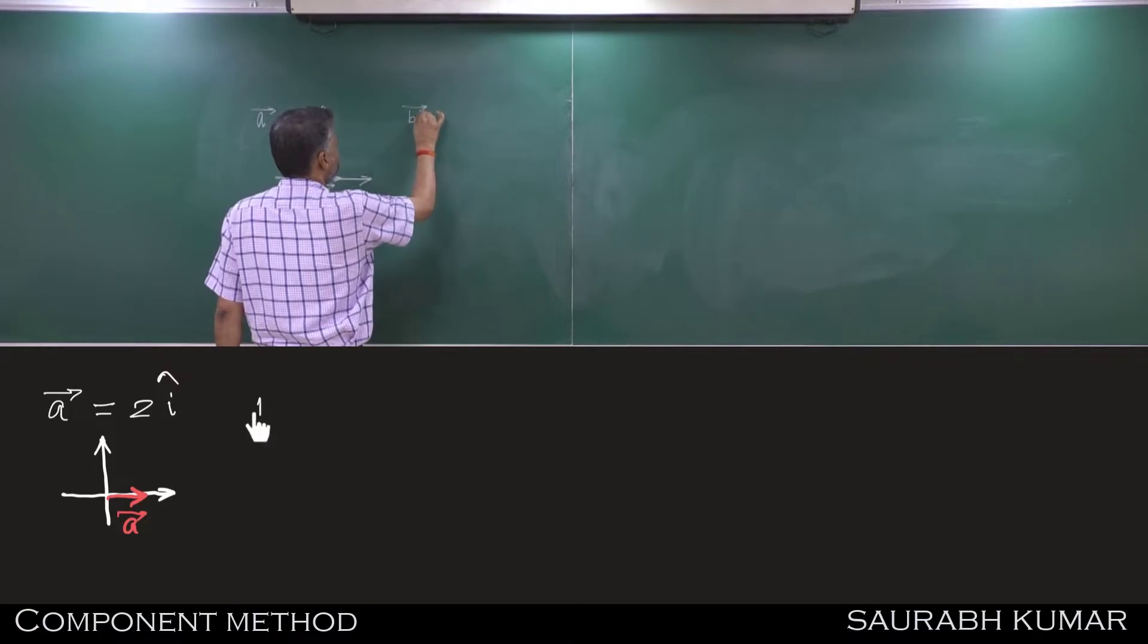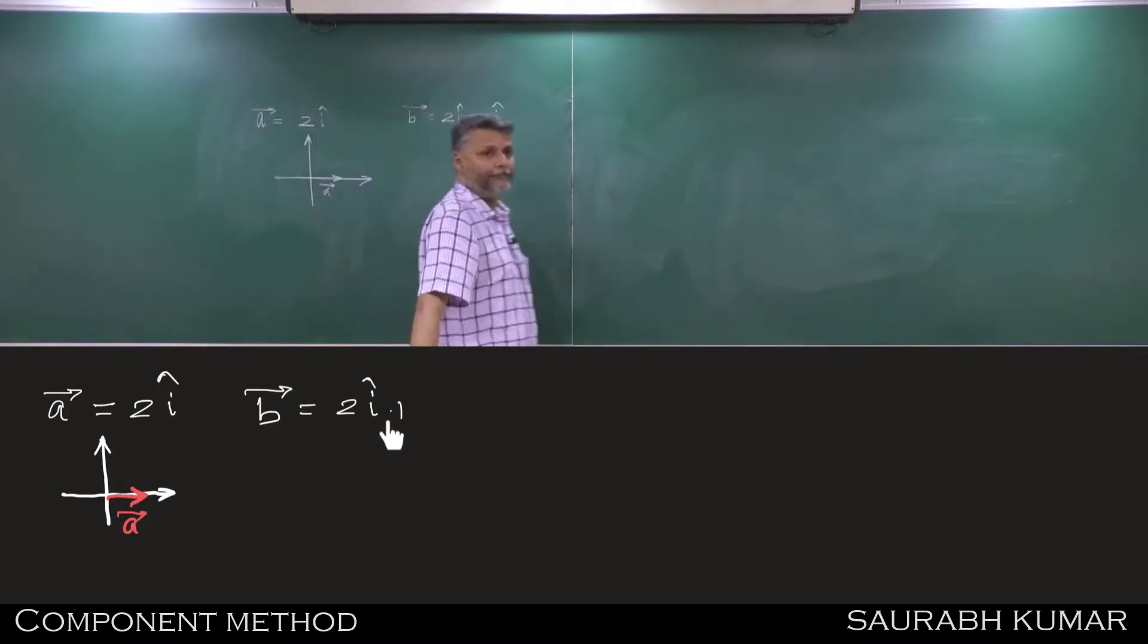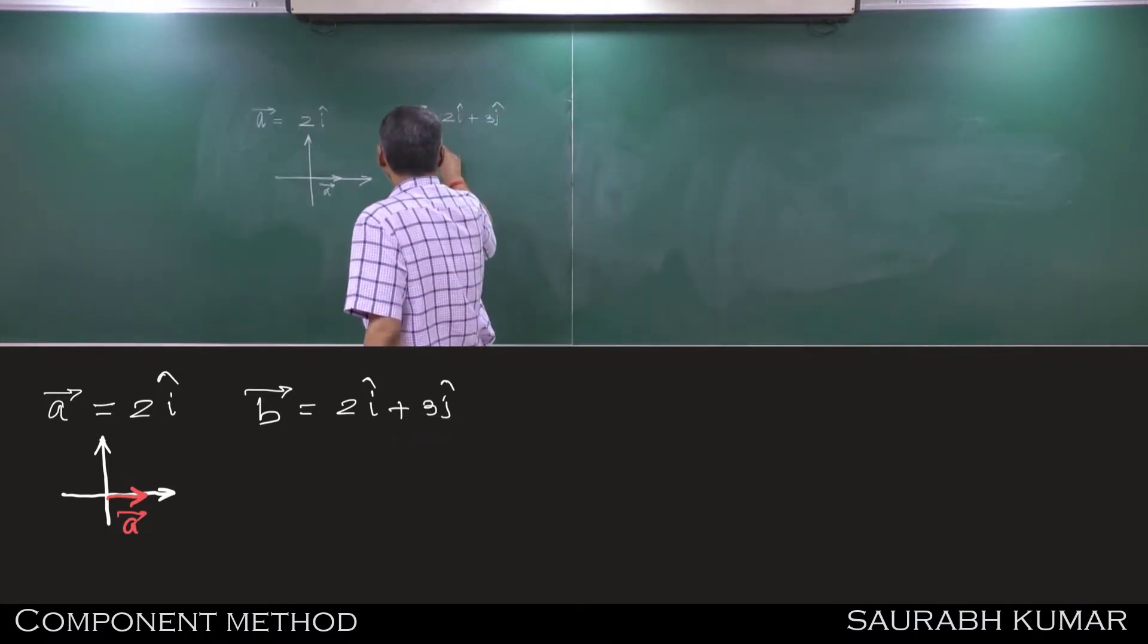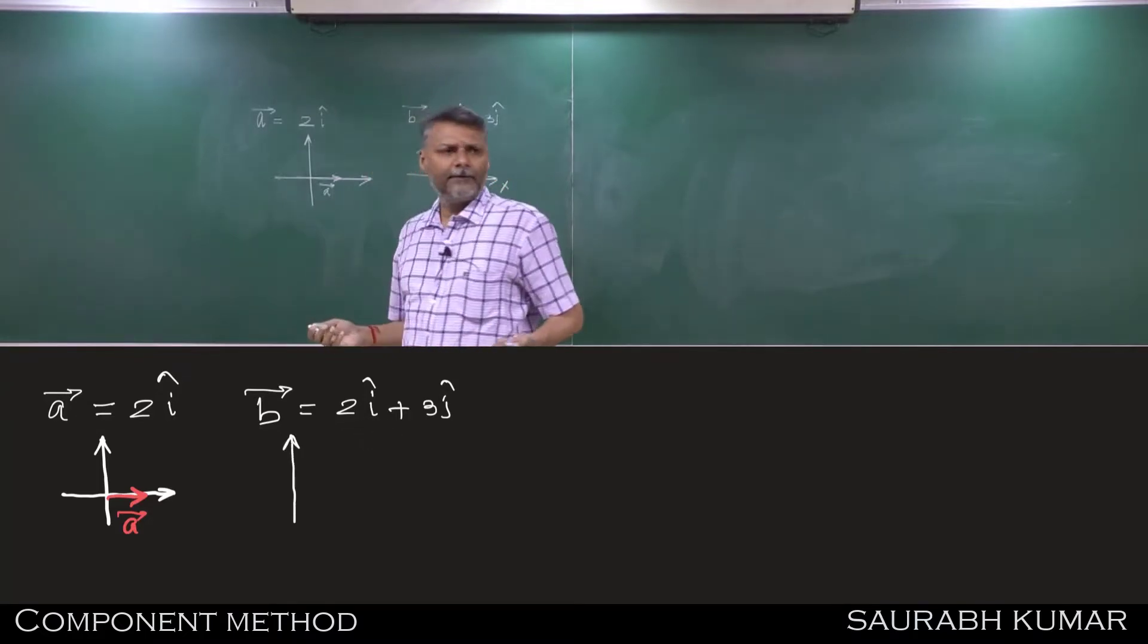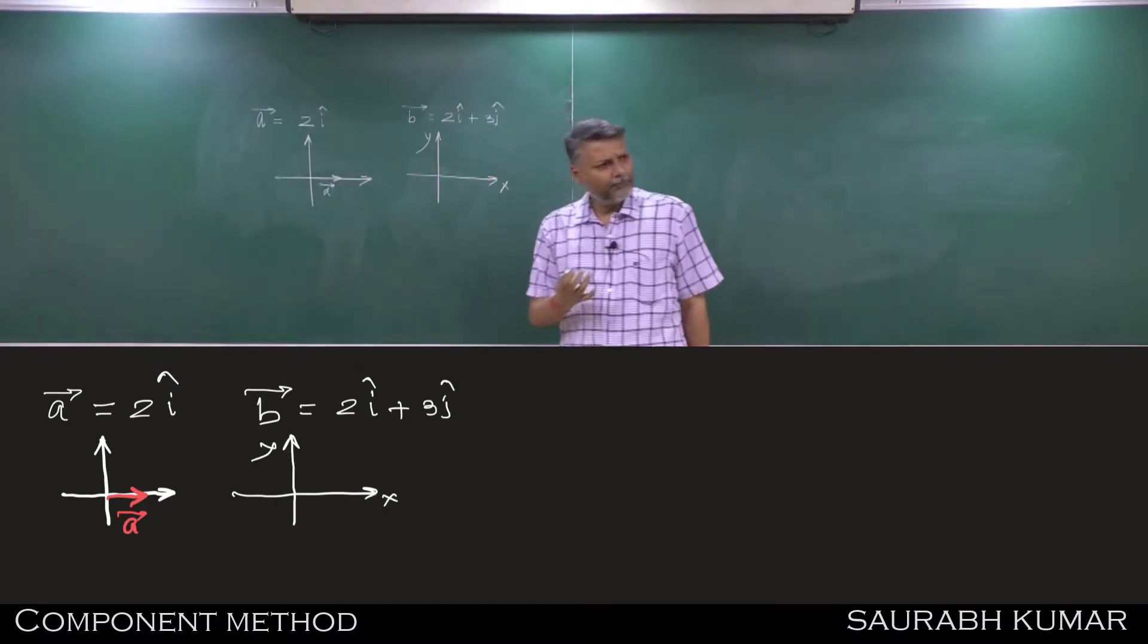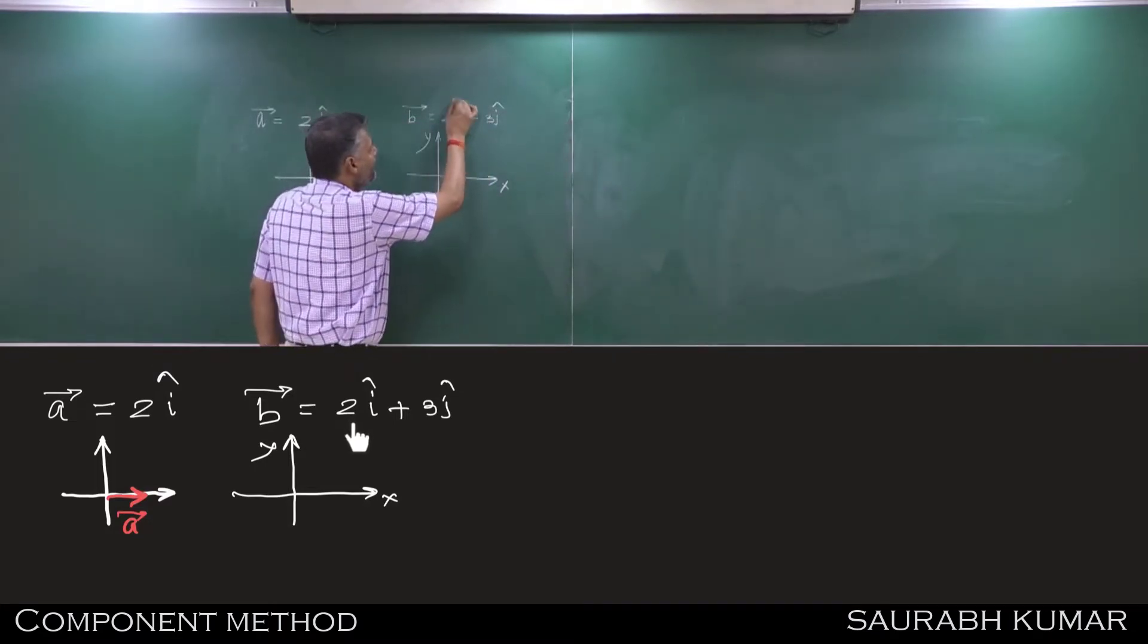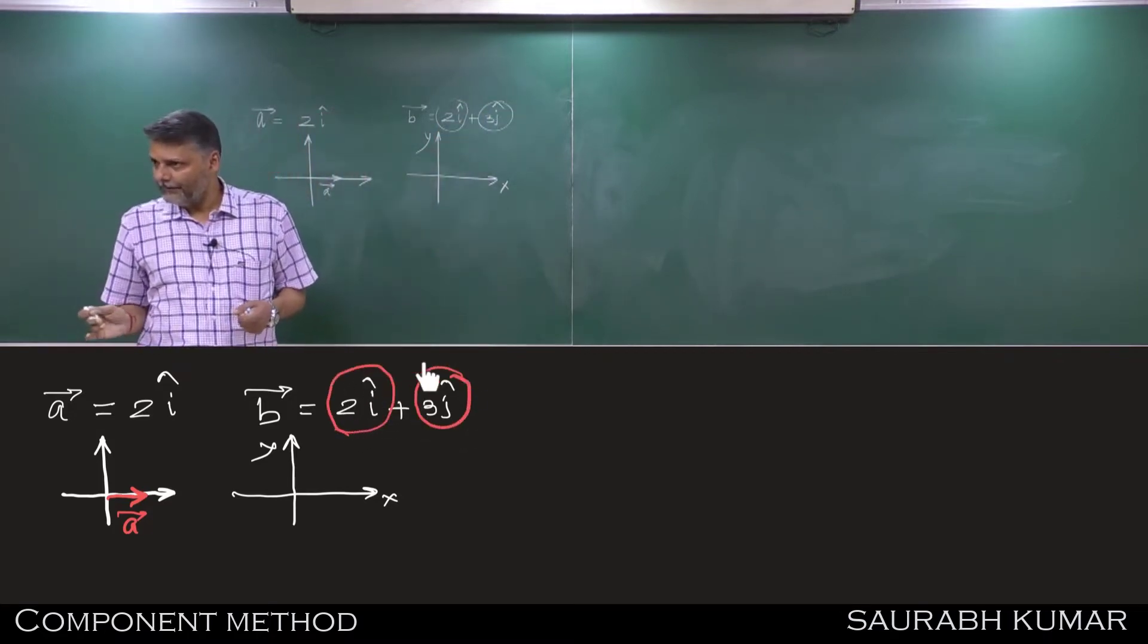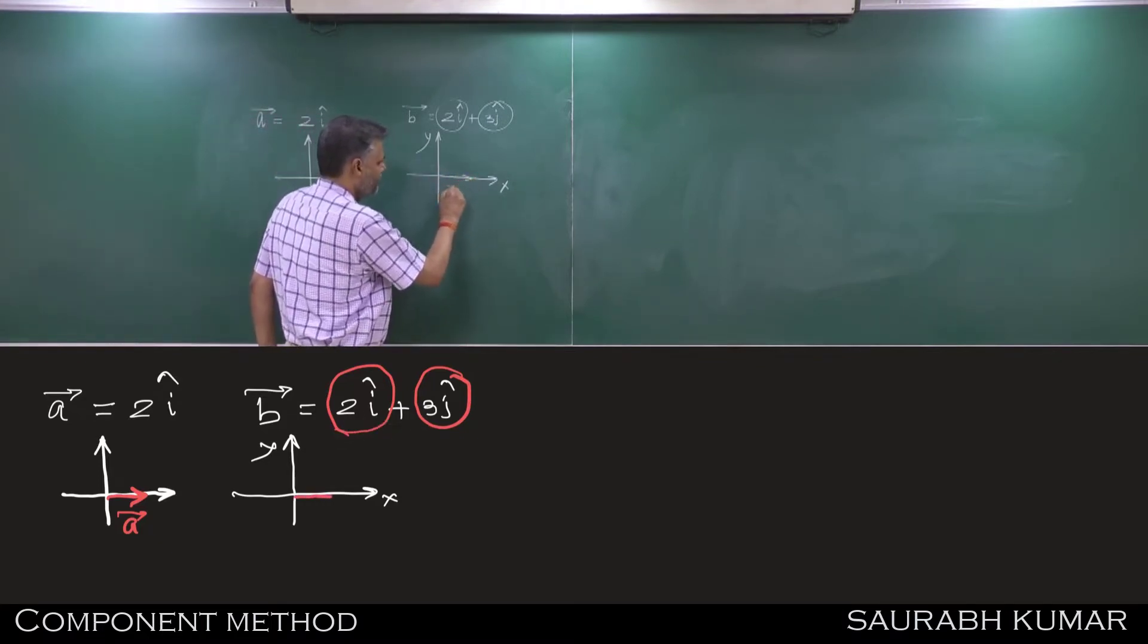Next is vector B, 2i cap plus 3j cap. Can we interpret this as sum of two vectors? 2i cap plus 3j cap. Can we use triangle law? Yes. 2i cap is this vector.